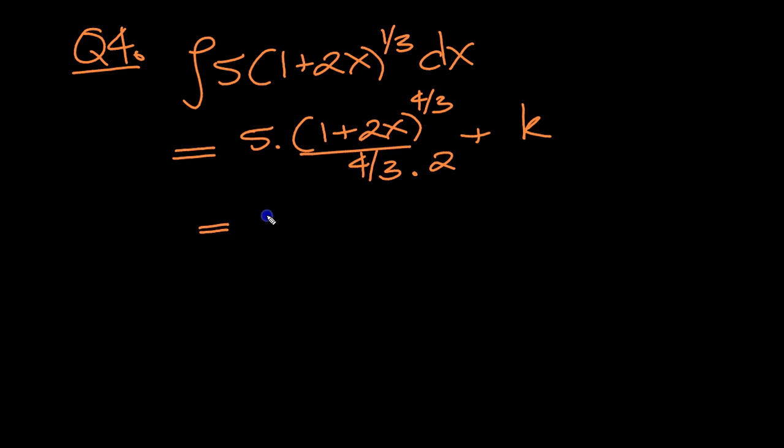So the 3 can come up to be with 5 to make 15. So 15 times (1 plus 2x) to the 4 thirds over 8 plus k.